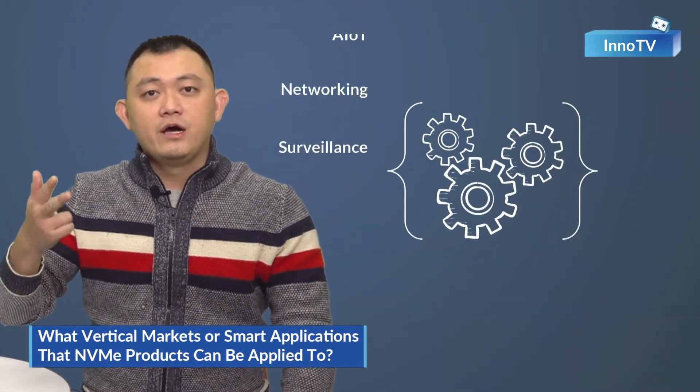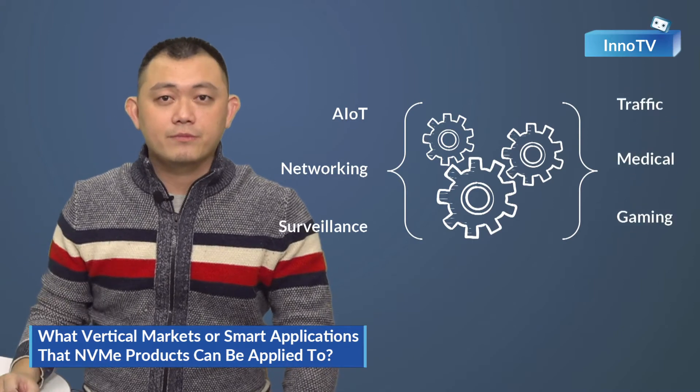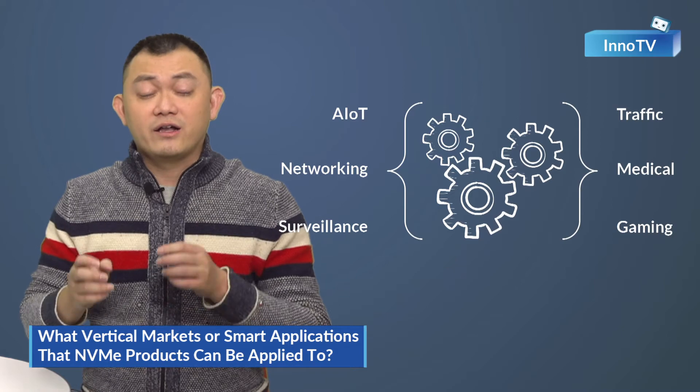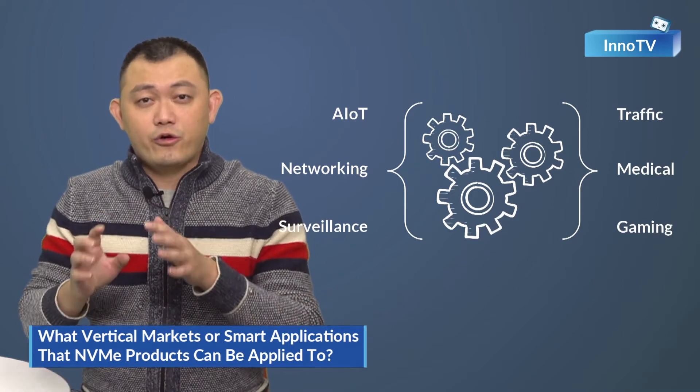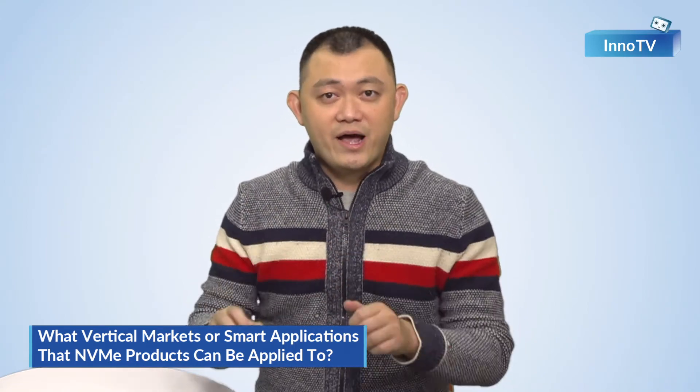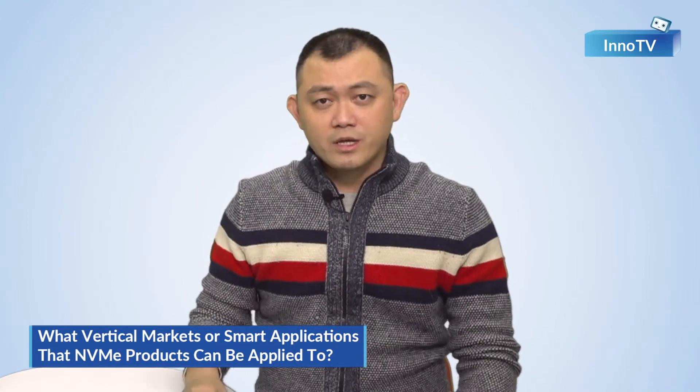Okay. The industrial storage market can be roughly separated into six parts: surveillance, transportation, medical, IoT, networking, and gaming. Among these markets, surveillance, IoT, and networking are the first tier — they require the most advanced technologies. All these applications need high-speed, high-capacity, and data safety. All these requirements can only be satisfied by the NVMe technology.